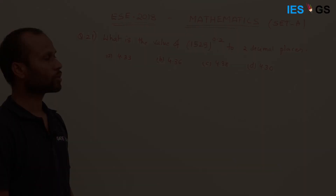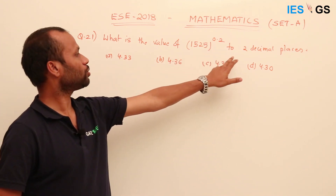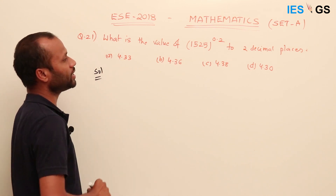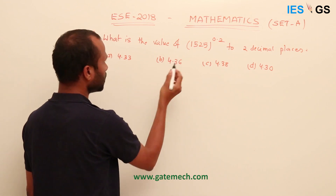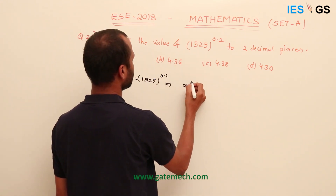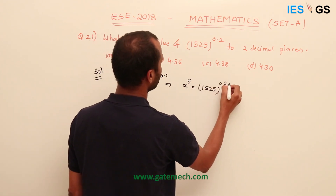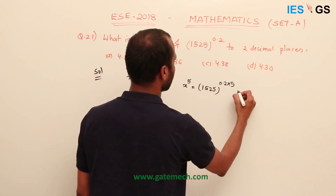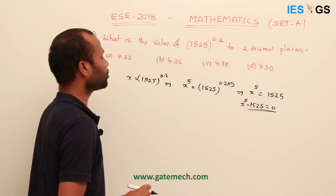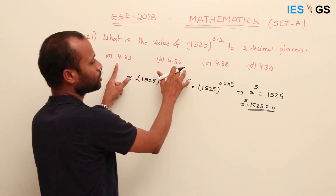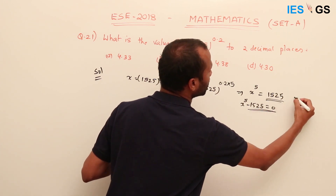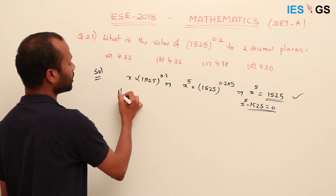Question number 21: what is the value of 1525^0.2 to two decimal places? Options: 4.33, 4.36, 4.38, 4.30. Raising both sides to the power 5: x⁵ = 1525, or x⁵ − 1525 = 0. One method is to substitute each option and find the fifth power; whichever is closest to 1525 is the answer. Alternatively, use Newton-Raphson.